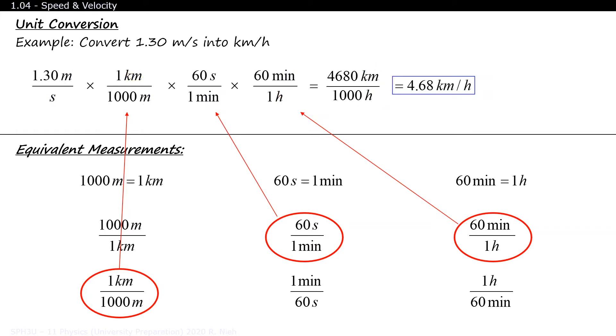If you're wondering why the final answer is written as 4.68, we need to take a look at the significant numbers in our calculations. 1.30 is 3 sig fig, and all the equivalent measurements have infinite certainty and infinite precision. For example, there is exactly 60 seconds in one minute. Not one more, not one less. Since 1.30 is 3 sig fig, our final answer is also 3 sig fig.